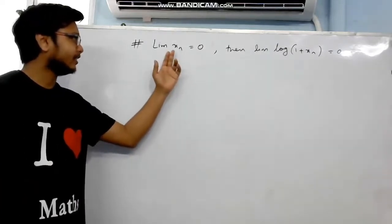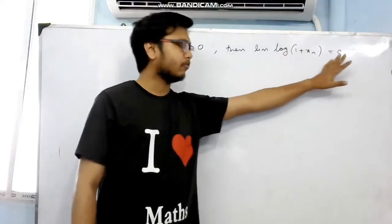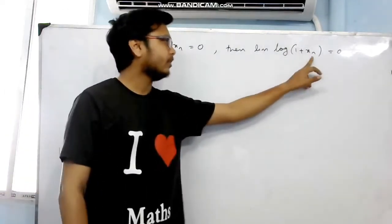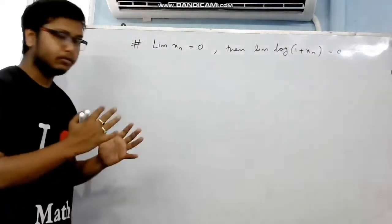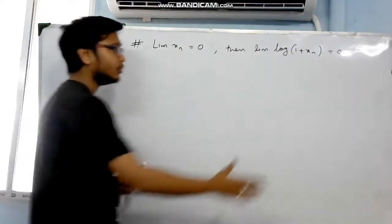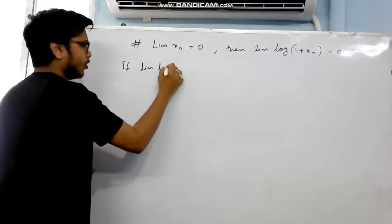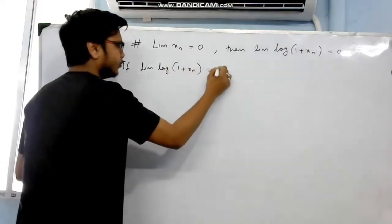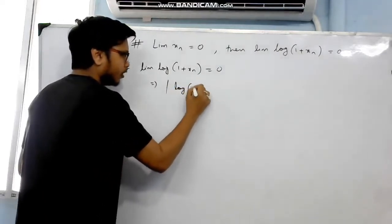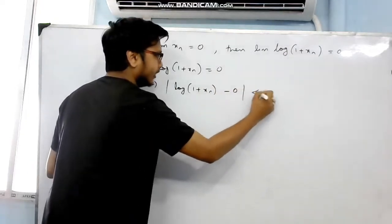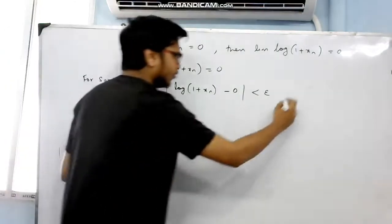It is given that the sequence xn converges to 0. We want to prove that the sequence log(1 + xn) will also converge to 0. It is easy to observe that if xn tends to 0 then the xn part will tend to 0, leaving log(1), which is 0. But we need to prove this with the help of the concepts of sequences.